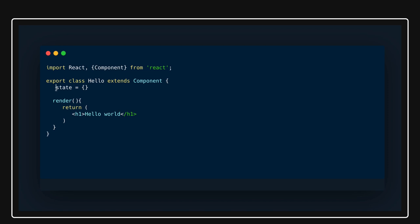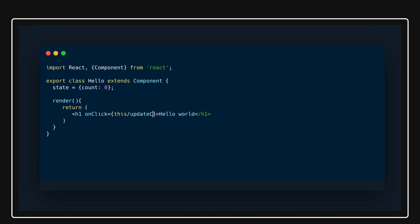In the state you can have 'count' initialized to zero. You might have an onClick method here which will actually update the count — you call 'this.updateCount'. If you're writing a constructor, you have to bind this method; otherwise you can just use an arrow function and call the method directly.